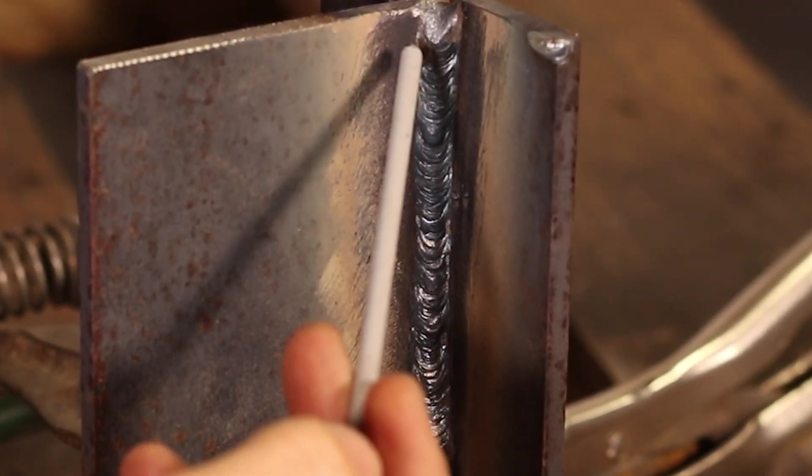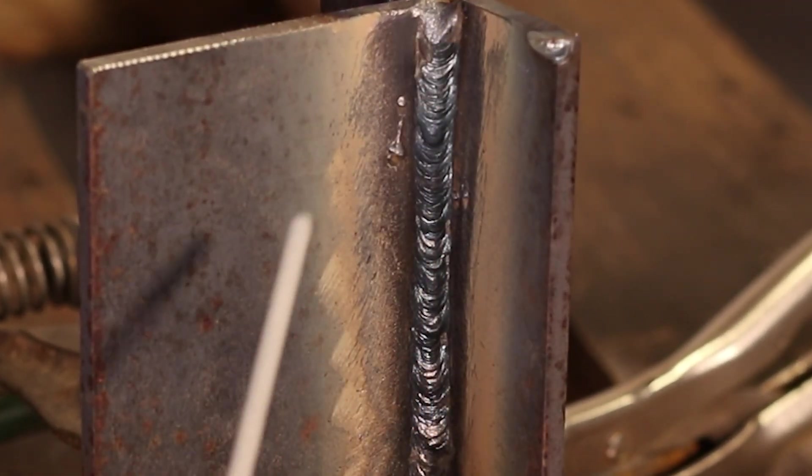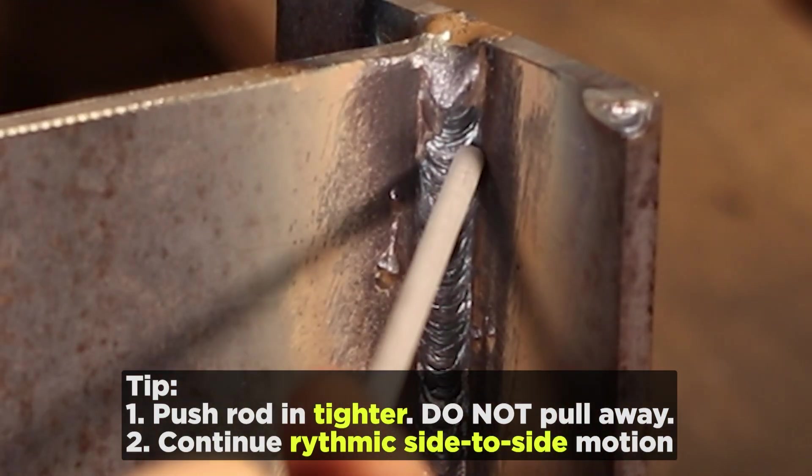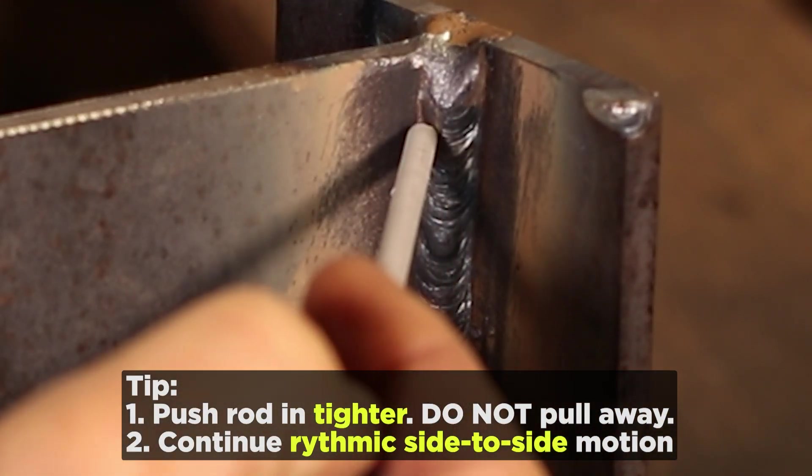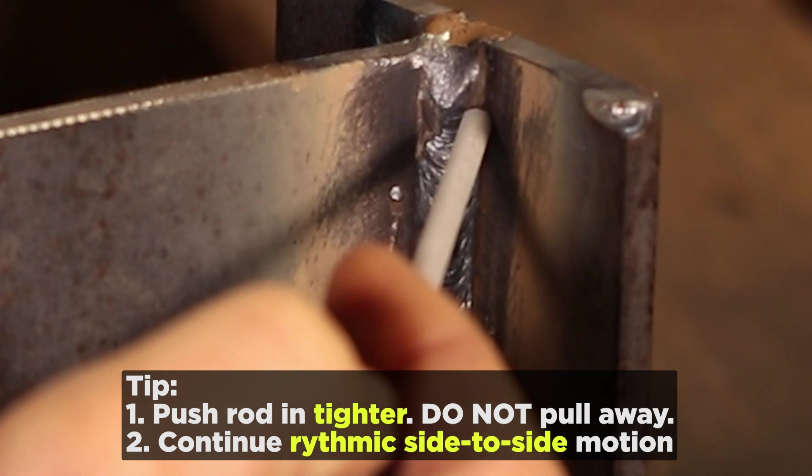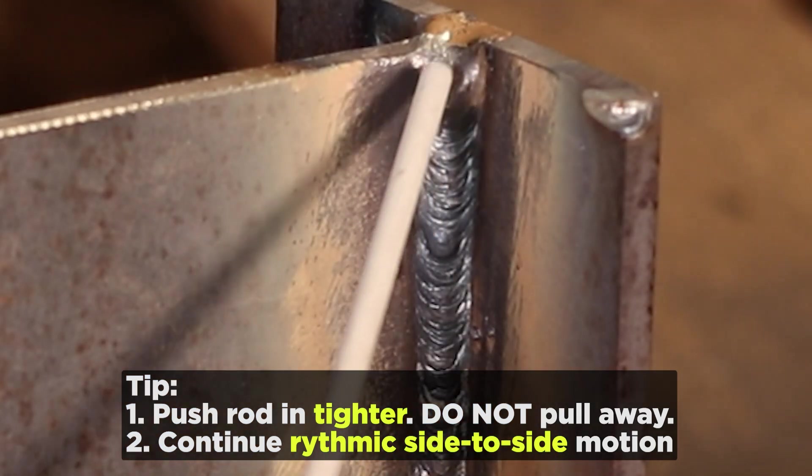So then your weld starts to droop, you start cutting in on the sides. So a really easy solution to that is just push that rod in tighter. So hold your rod really tight and keep working the metal like that. Whatever you do, do not pull away.